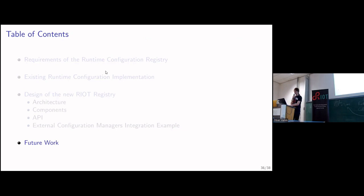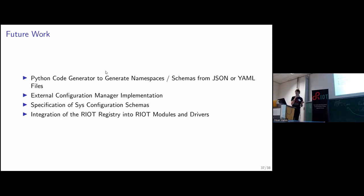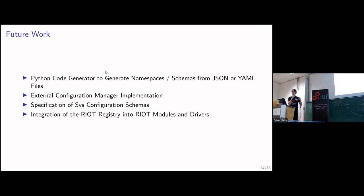Let's talk about future work. Currently, other configuration schemas are written as pure C code. The idea is to instead define configuration schemas in a YAML format, then have a code generator that generates all the C code, and then inside the driver you only need to write some C code to use that instance. We also want to have more configuration management implementations — right now I've written a CLI. We need to define all those configuration schemas for all the use cases and integrate them into RIOT. Of course, this future work has now changed since we also need to do some collaboration.